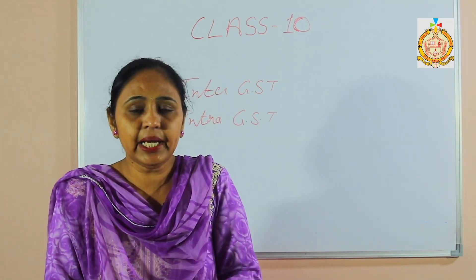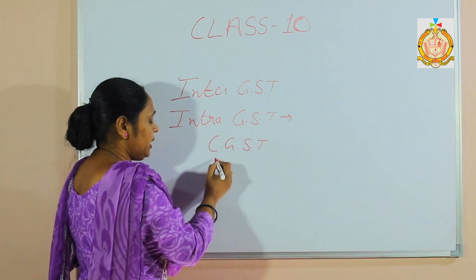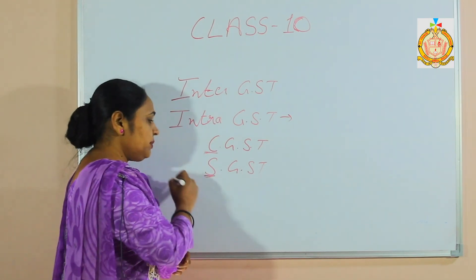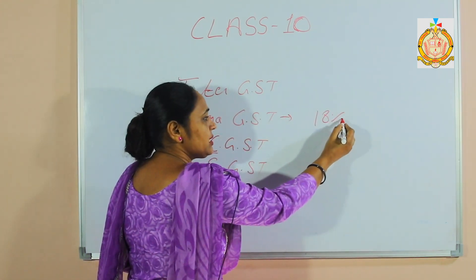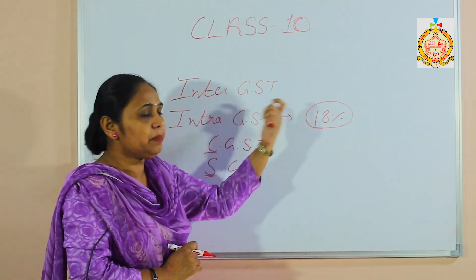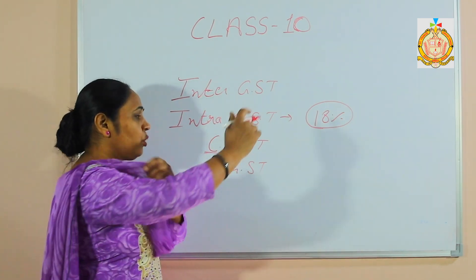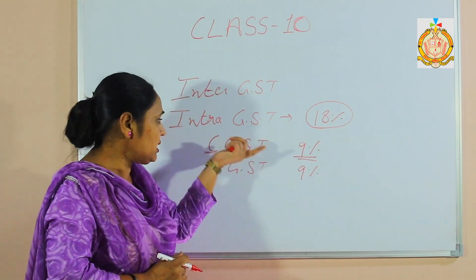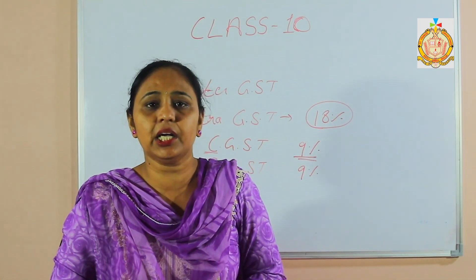In intra-state transactions, there are two types of GST: CGST and SGST. C means central and S means state. Suppose the GST rate is 18%. Half will go to the central government and half will go to the state government. So the central government takes 9% and SGST is also 9%. In intra-state, CGST and SGST are each half of the total GST.